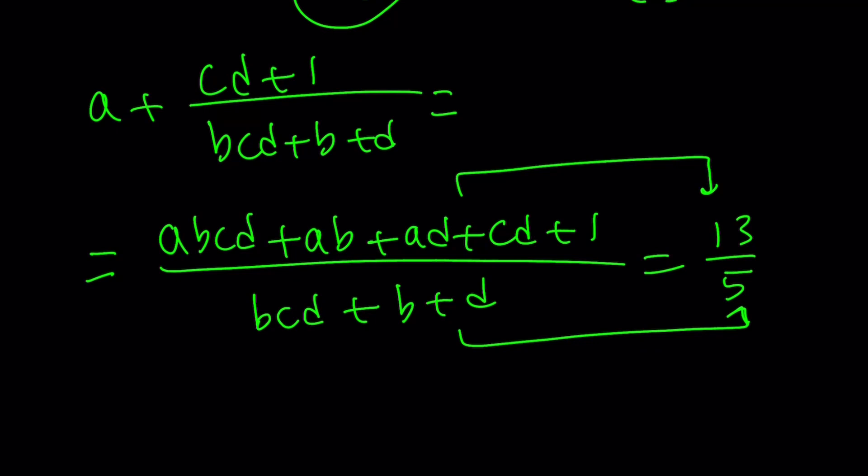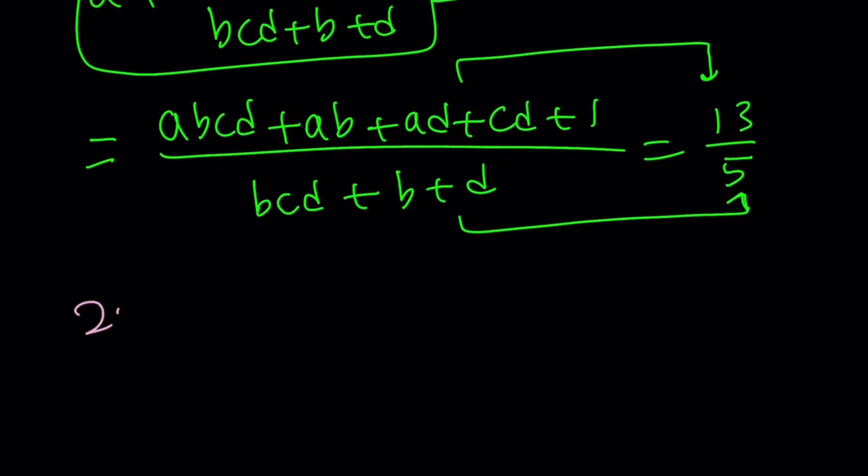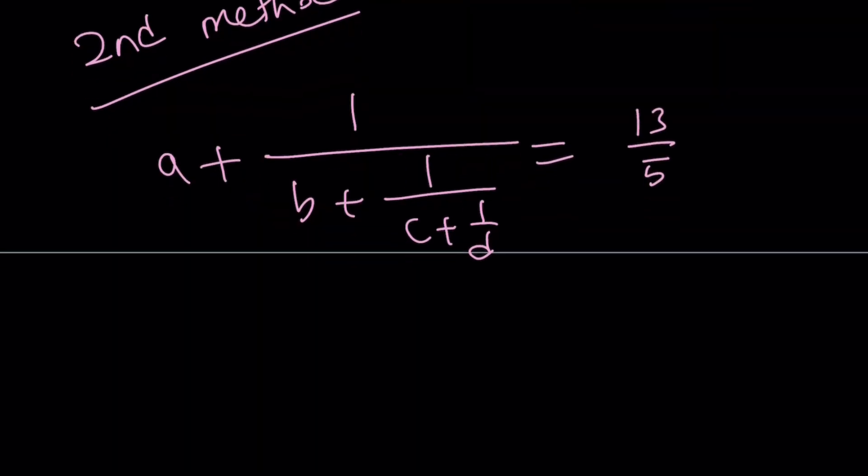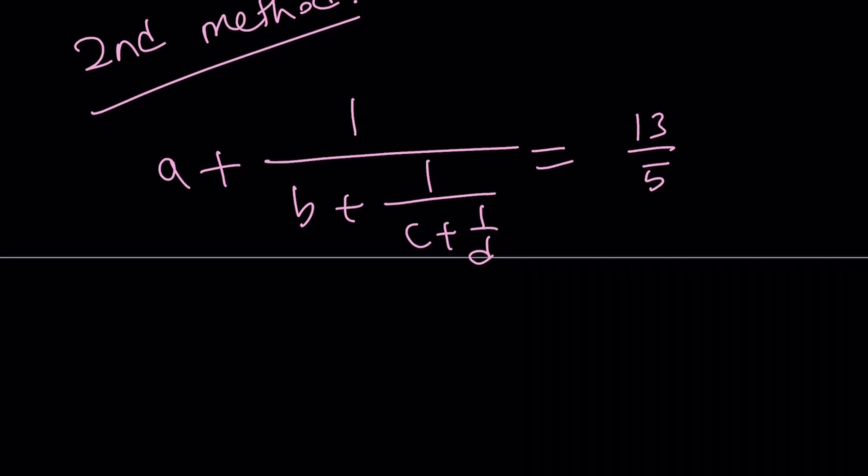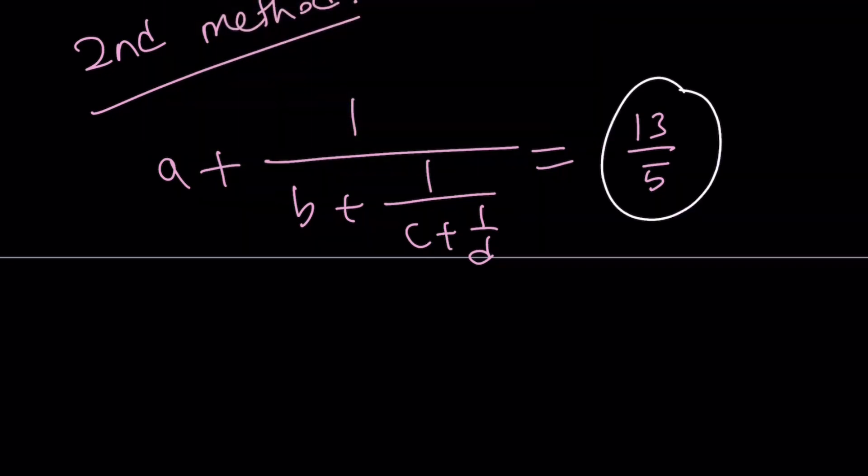Maybe there is a way to solve it, but as you can see, this is very painful. So our second method, which will be completely solved by the way, involves the following. Let me rewrite the original problem: A plus 1 over B plus 1 over C plus 1 over D. To solve this problem, we're not going to mess with the left-hand side because that's already very messy. We're going to mess with the right-hand side.